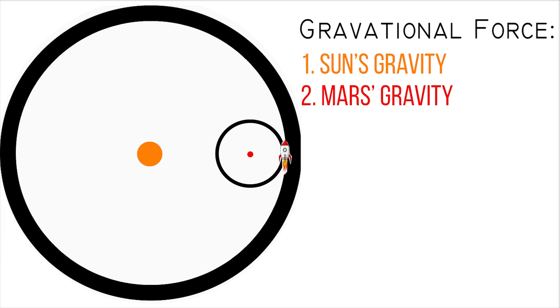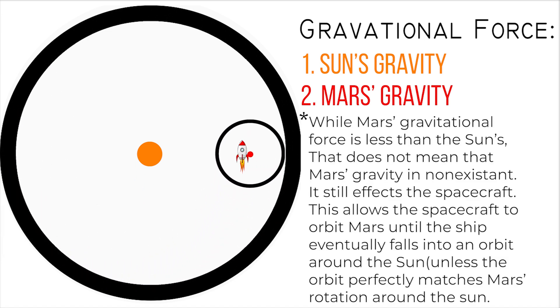TLDR, a ballistic capture orbit is an orbit where a spacecraft orbits the sun at the same rate of rotation that Mars moves at. So, if you position a spacecraft near Mars and then sync to Mars' rotation around the sun, then you will orbit Mars as the spacecraft is constantly affected by Mars' gravity.